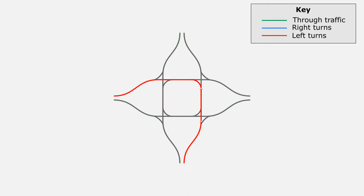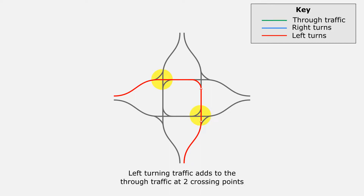The squareabout does have one downside in that the left turns still have to join with the through traffic and cross at two particular crossing points. In this map and most intersections in real life, the vehicles travelling through the intersection are the most numerous, so it's these two crossing points that are the biggest problem for any intersection.